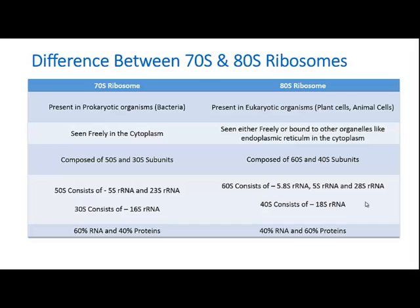The 70S ribosome is composed of 50S and 30S subunits, whereas the 80S ribosome is composed of a 60S larger subunit and a 40S smaller subunit. The 50S larger subunit of the 70S ribosome has 5S rRNA and 23S rRNA, and the 30S smaller subunit consists only of 16S rRNA. The 60S larger subunit of the 80S ribosome is composed of 5.8S rRNA, 5S rRNA, and 28S rRNA.